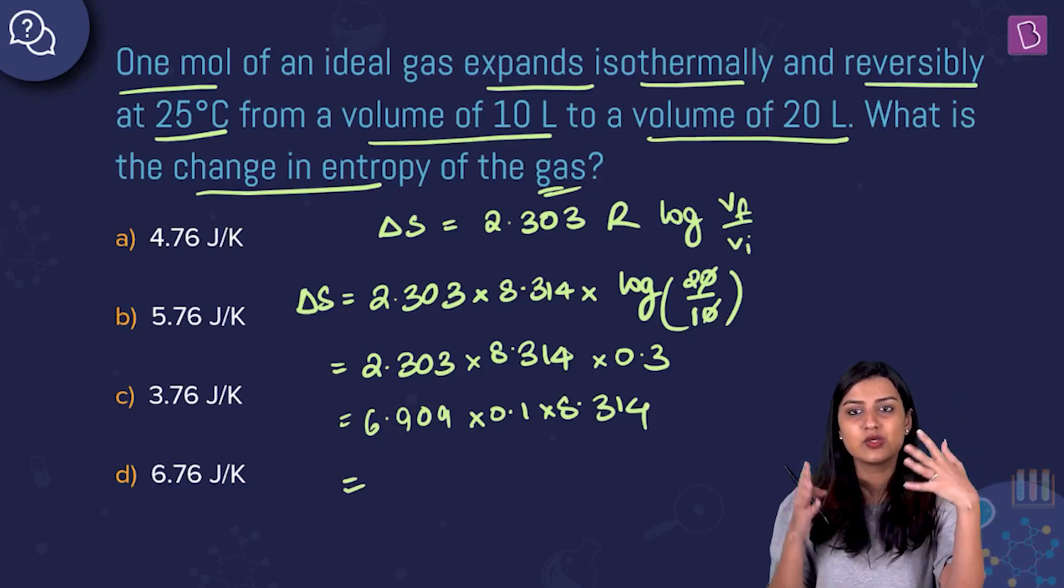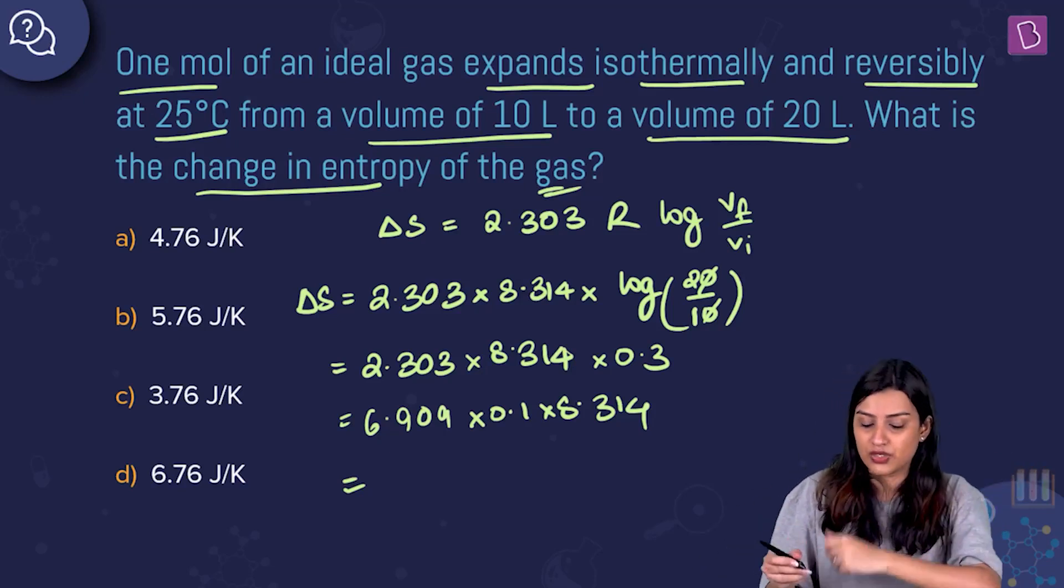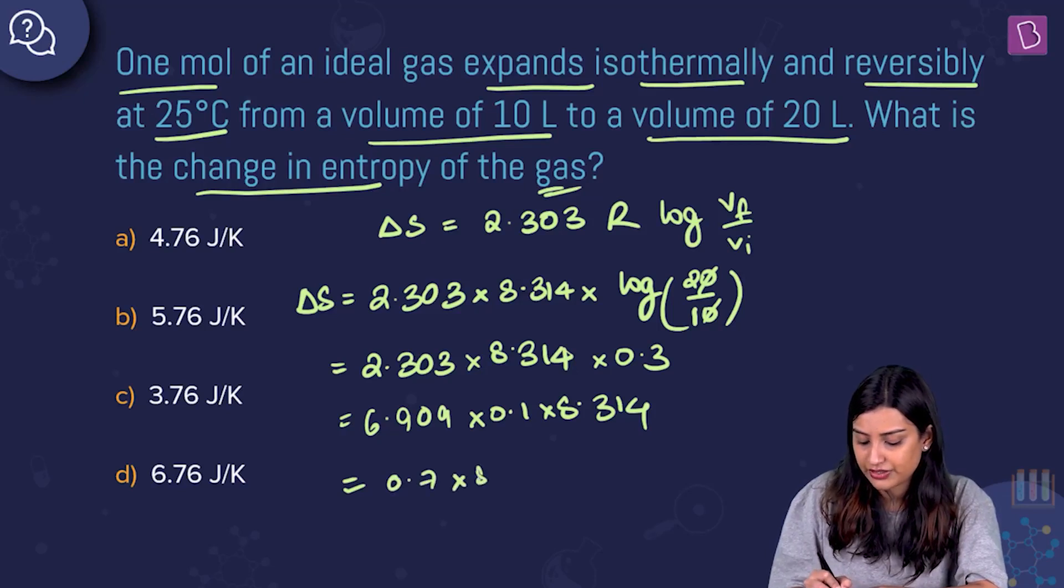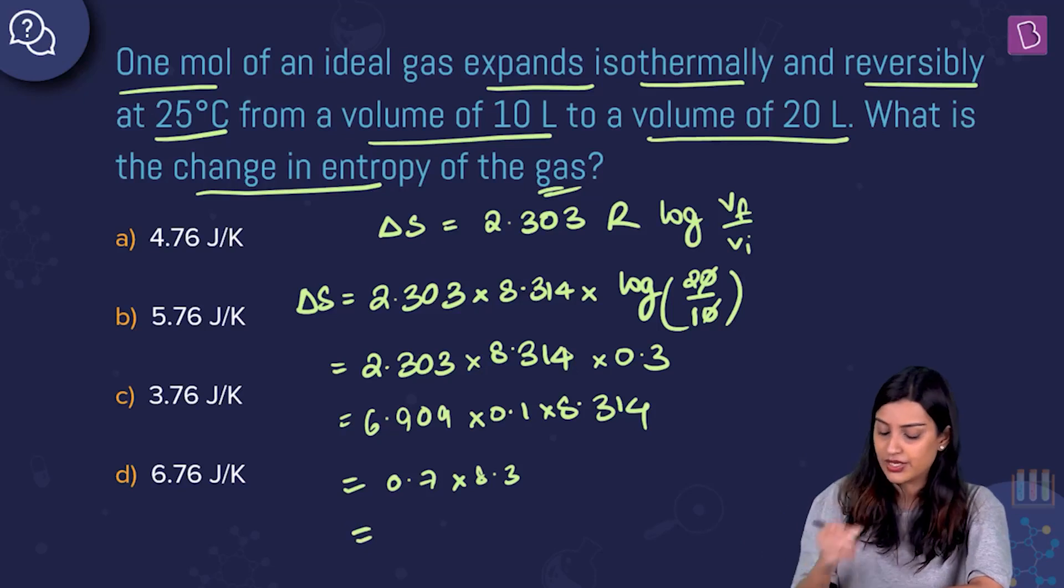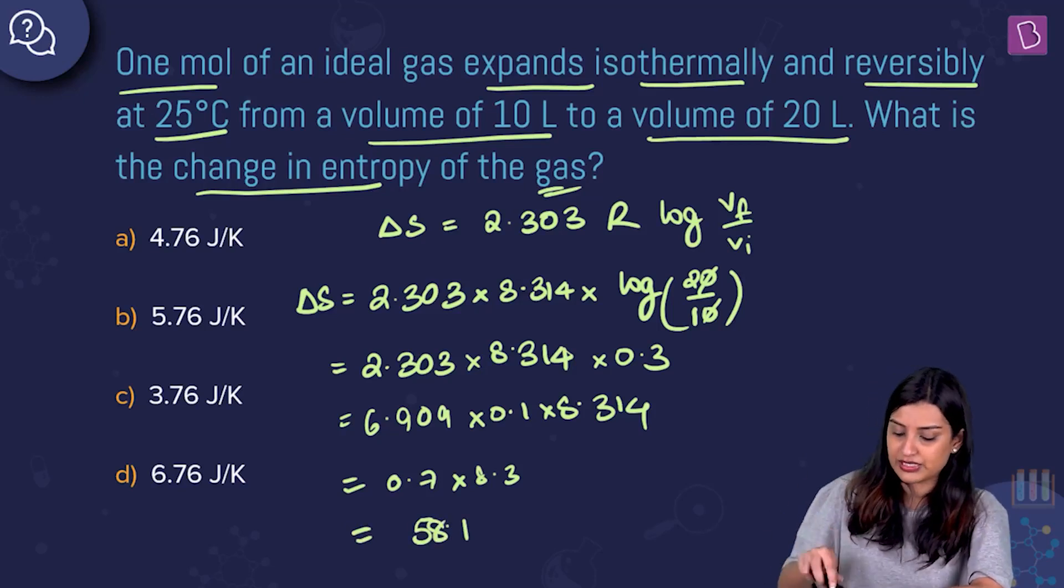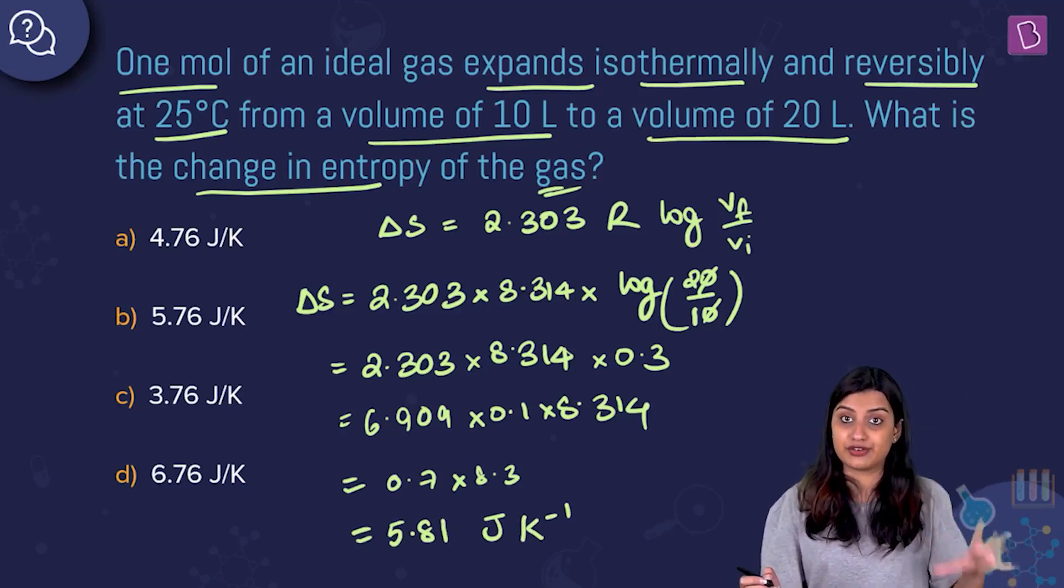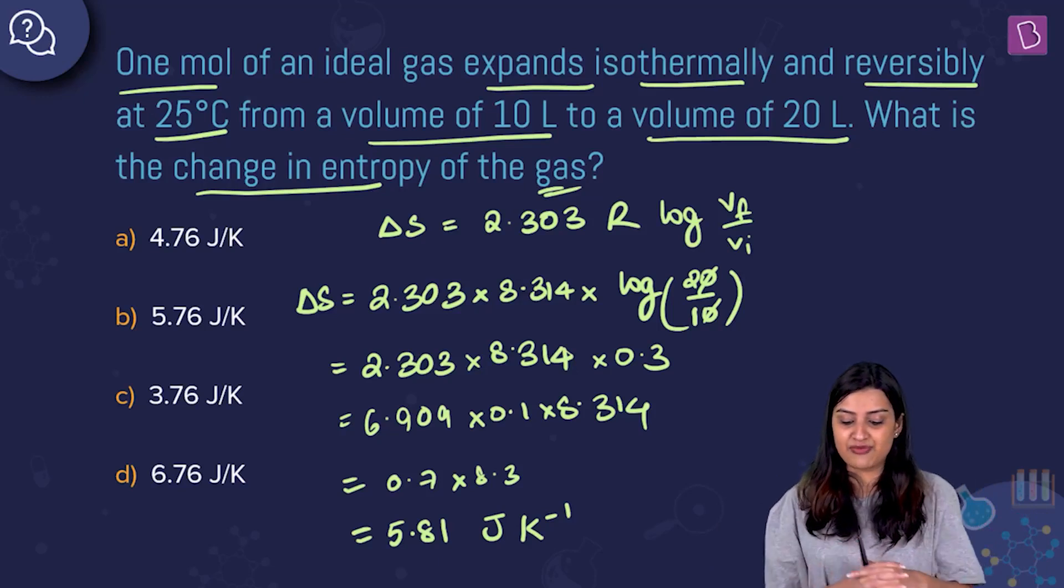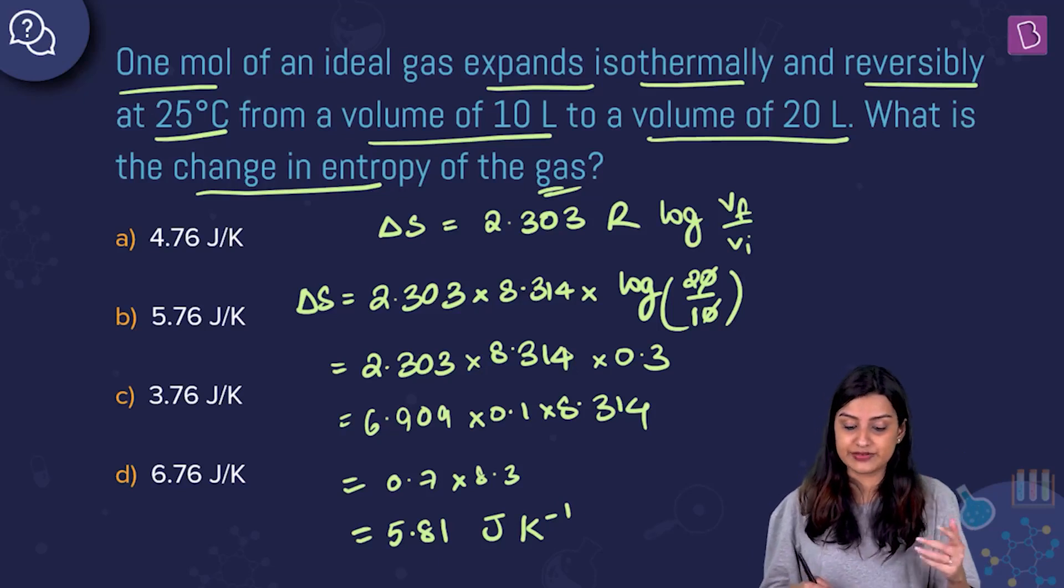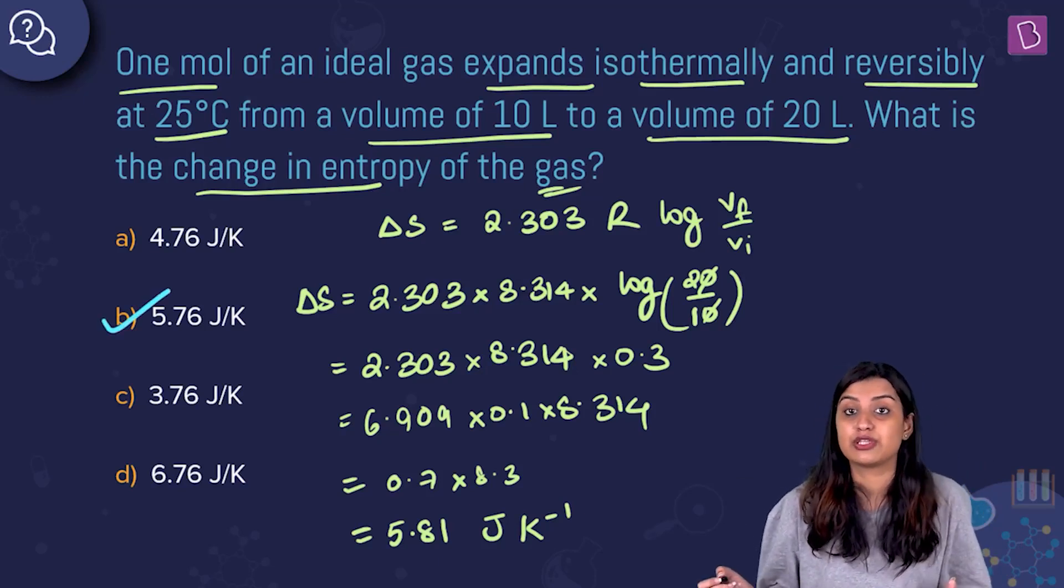I'm doing 2.303 into 0.3, so I get 0.6909. Multiply it by 0.1, multiplied by 8.314. I took 2.303 and multiplied it only by 3, so I wrote a 0.1 there just to ensure I'm not making the mistake later. My options are pretty far enough, so I have scope for approximation. I'm going to approximate 6.909 to 7. Now I have 0.7 into 8.314. I'm going to write 8.314 as 8.3 and multiply that with 7. 7 times 8 is 56 plus 2 is 58, but it's 0.7 so it becomes 5.81. 5.81 joule kelvin inverse is your change in entropy. Option B, 5.76 joule per kelvin, is very close. It is the only option suitable considering the value we have gotten. Option B is the right answer.